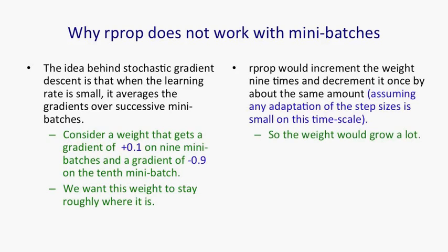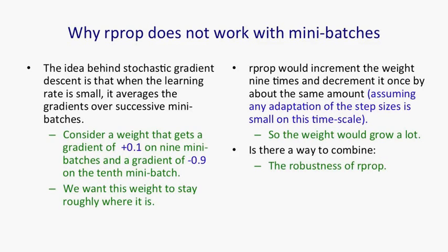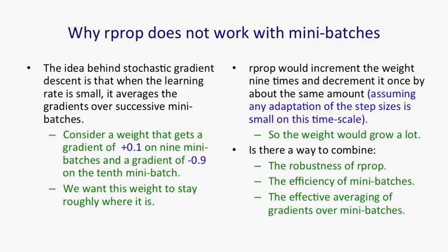RProp won't give us that. RProp would increment the weight nine times by whatever its current step size is, and decrement it only once, and that will make the weight get much bigger. We're assuming here that the step sizes adapt much slower than the timescale of these mini-batches. So the question is: can we combine the robustness from RProp of just using the sign of the gradient, the efficiency from mini-batches, and the averaging of gradients over mini-batches that allows mini-batches to combine gradients in the right way?